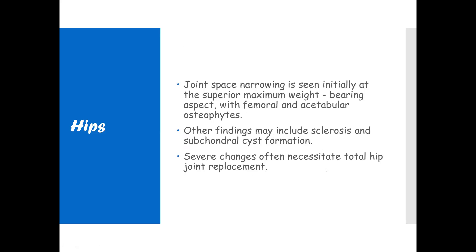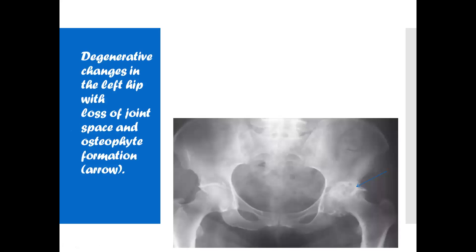On the hips, joint space narrowing is seen initially at the superior maximum weight-bearing aspect with femoral and acetabular osteophytes. Other findings include sclerosis and subchondral cyst formation. Severe changes often necessitate total hip joint replacement. This image shows degenerative changes in the left hip with loss of joint space and osteophyte formation.